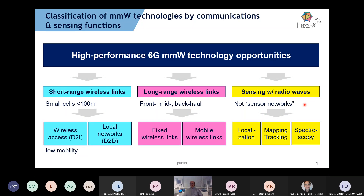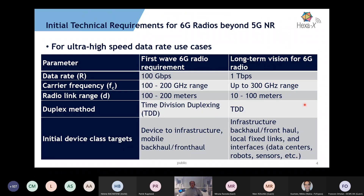To get a starting point for analysis, we have defined two scenarios before having very detailed use cases defining what bit rates will be needed. The first wave 6G radio requirement we are talking about is 100 gigabits per second in the 100 to 200 GHz range, radio link coverage 100 to 200 meters, assuming time-division duplexing, and looking at device-to-infrastructure or mobile and backhaul/fronthaul properties.